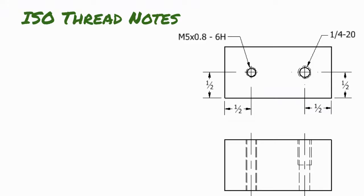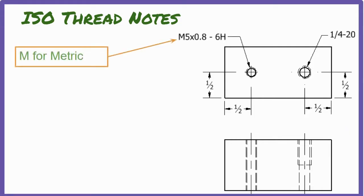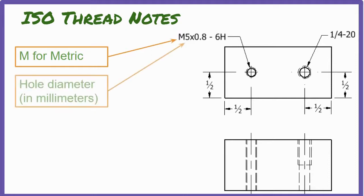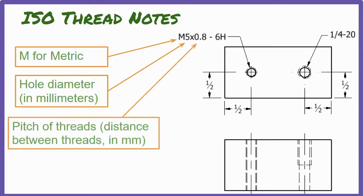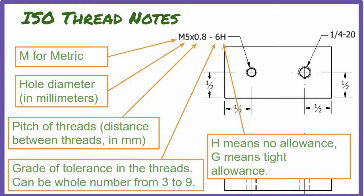ISO, or metric threads, look a little different than unified national thread notes, but they provide much of the same information. They will start with the letter M, which indicates a metric thread. Then the number that follows is the hole diameter in millimeters. The next number is the pitch of the thread, or the linear distance from one thread to the next, in millimeters. Note that this is different from unified national threads, which indicate TPI instead of pitch. The next number is a grade of tolerance for the thread, which can be a number from 3 to 9, and the letter that comes last is H or G — H indicating no allowance between mating threads, and G indicating a tight allowance.